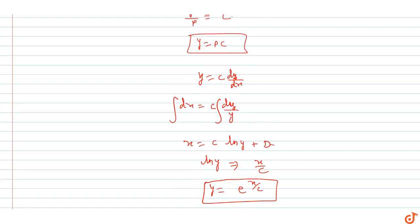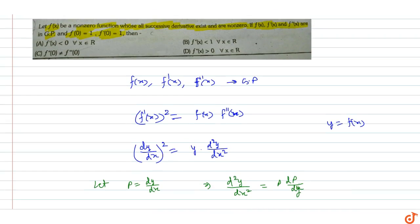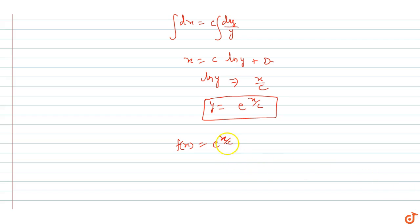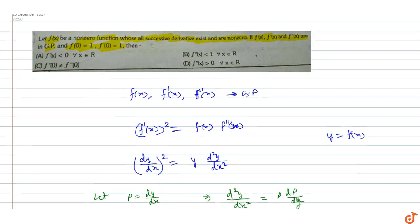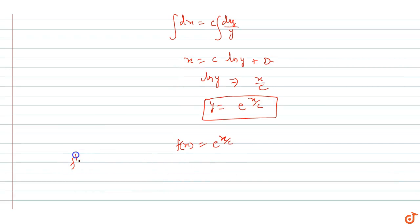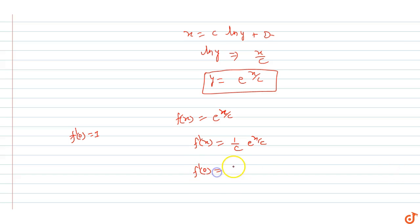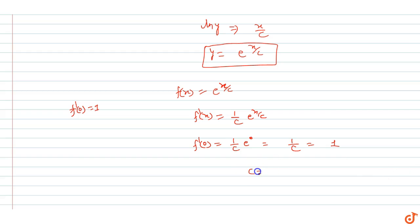Now applying f(0) = 1: f(0) = e^0 = 1, which is satisfied. Differentiating, f'(x) = (1/c)·e^(x/c). Applying f'(0) = 1: f'(0) = 1/c · e^0 = 1/c = 1, so c = 1.